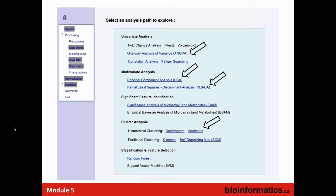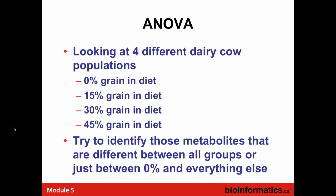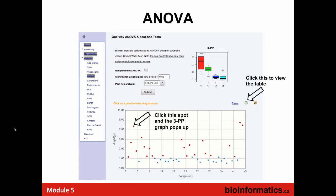In this case, we're not going to do a t-test — we're going to do ANOVA because we're not dealing with two populations, we're dealing with four populations. Four different diets: one with grass, one with 15% grain, one with 30%, one with 45%. We're trying to identify metabolites that are different between all of the groups, or between the control at 0% and everything else. We can go straight to the ANOVA analysis.